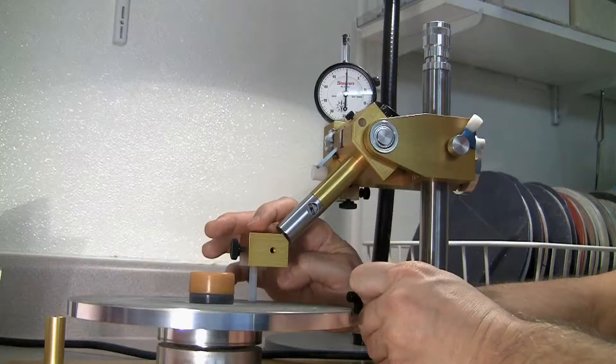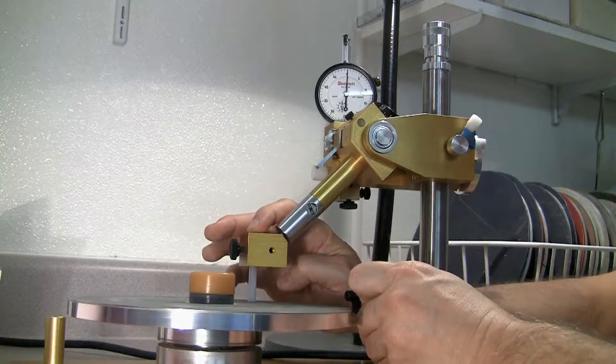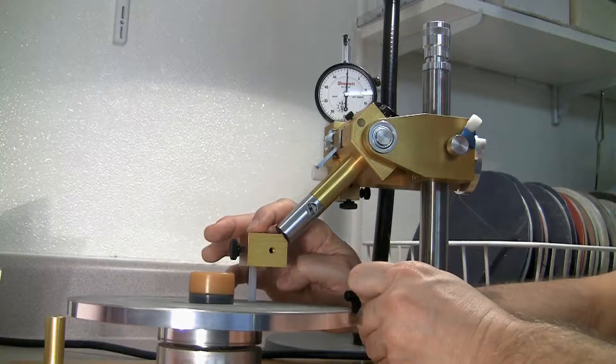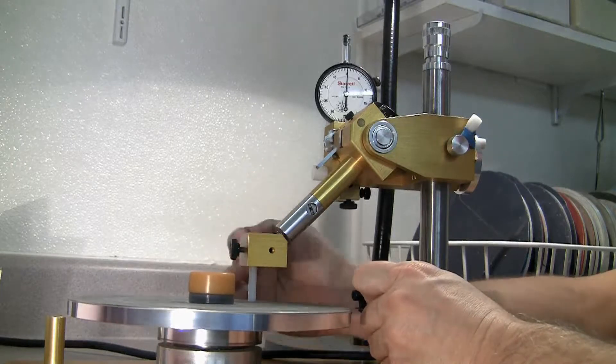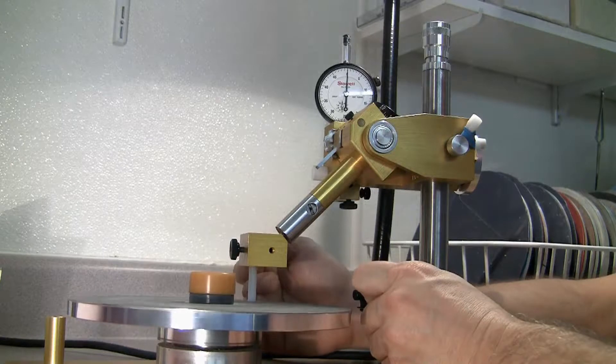You might notice that we're not making the sound all the way around, just hitting the high spot on the highest part of the lap. Hear the intermittent sound? That means we're only touching the high side of the lap, and that means that we've pretty much reached our depth.